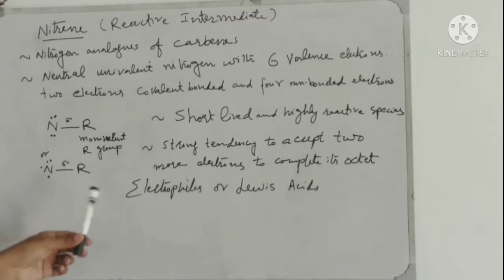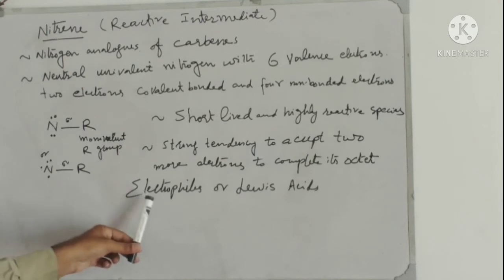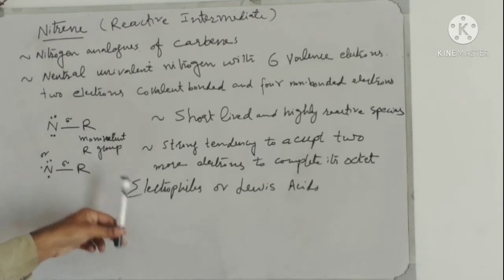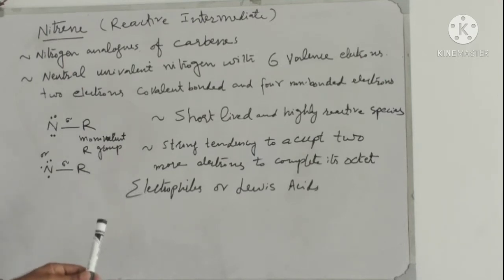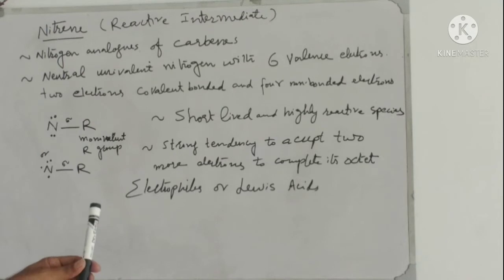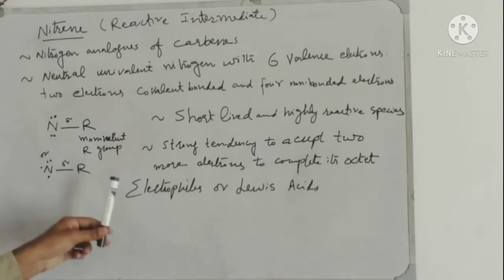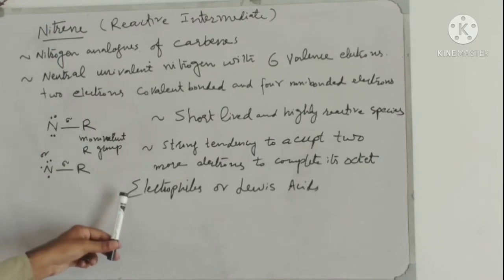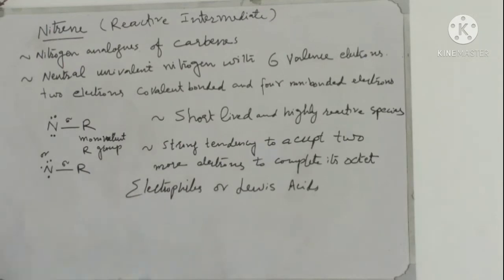This property of nitrenes is similar to carbenes, because as we discussed in previous lectures, carbenes are also neutral species and electrophiles or Lewis acids.